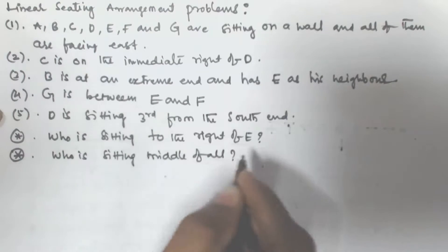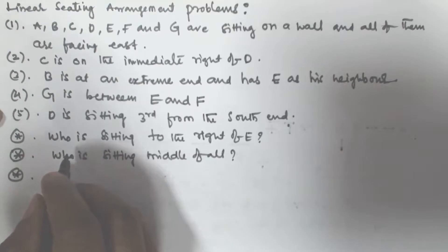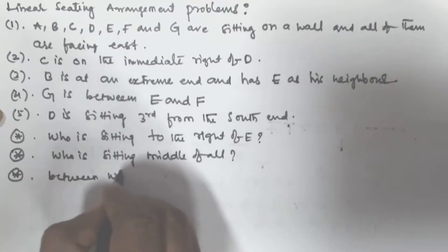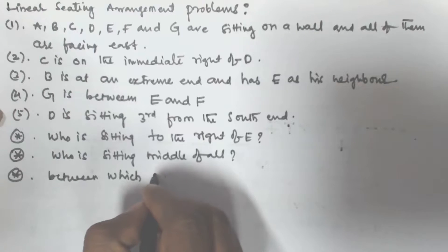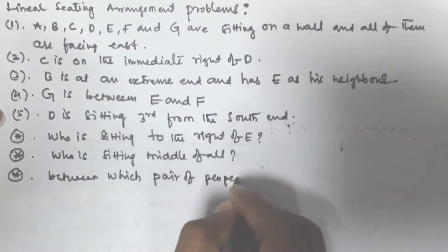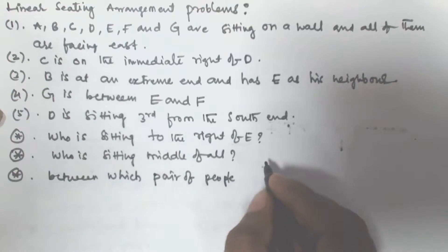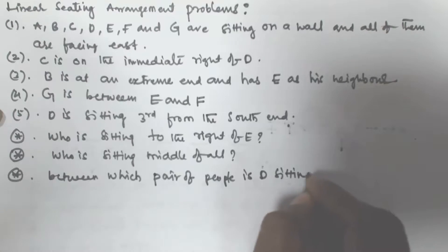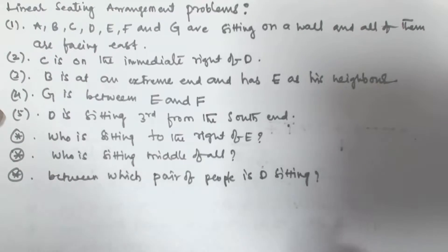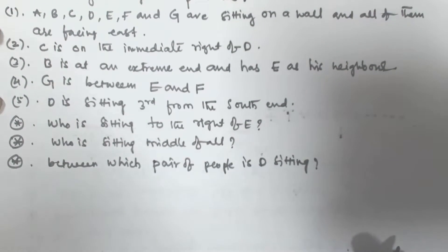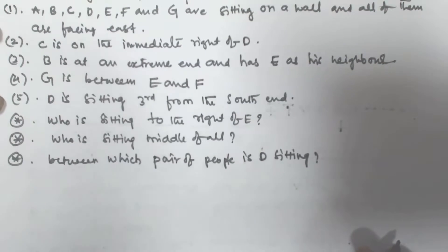The second question is who is sitting in the middle of all? And the third one is between which pair of people is D sitting?